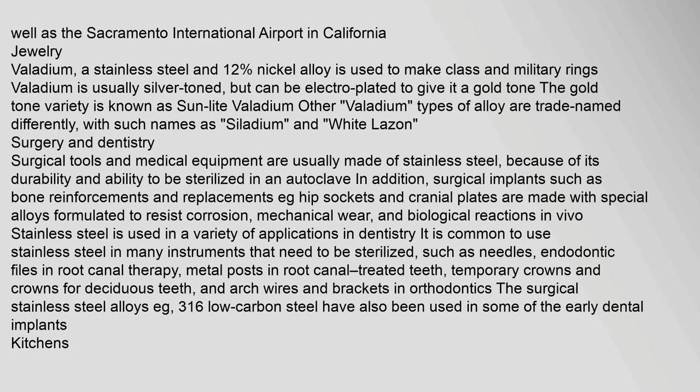Surgical tools and medical equipment are usually made of stainless steel because of its durability and ability to be sterilized in an autoclave. Surgical implants such as bone reinforcements and replacements (e.g., hip sockets and cranial plates) are made with special alloys formulated to resist corrosion, mechanical wear, and biological reactions in vivo. Stainless steel is used in a variety of dental applications including needles, endodontic files in root canal therapy, metal posts in root canal treated teeth, temporary crowns, crowns for deciduous teeth, and arch wires and brackets in orthodontics.